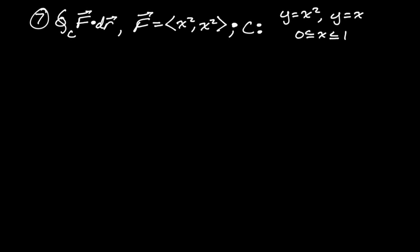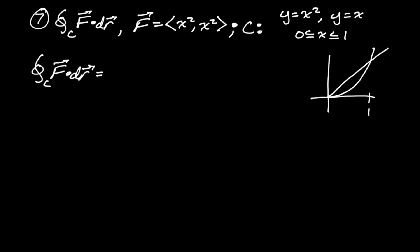Number seven: the line integral F·dR. We're given F = (x², x²), and our curve is the region bounded by x² and x, with x between zero and one. Let's sketch the region. X is going from zero to one, and y goes from bottom to top — from x² up to x. So the bounds of our double integral are zero to one and x² to x.